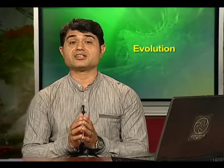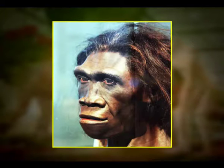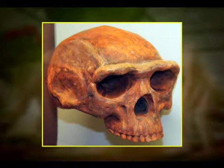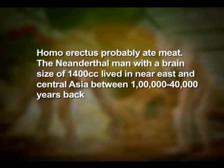They probably did not eat meat. Fossils discovered in Java in 1891 revealed the next stage — Homo erectus — about 1.5 million years ago. Homo erectus had a large brain around 900 cc and probably ate meat. The Neanderthal man, with a brain size of 1400 cc, lived in the near east and central Asia between 1 lakh to 40,000 years back.